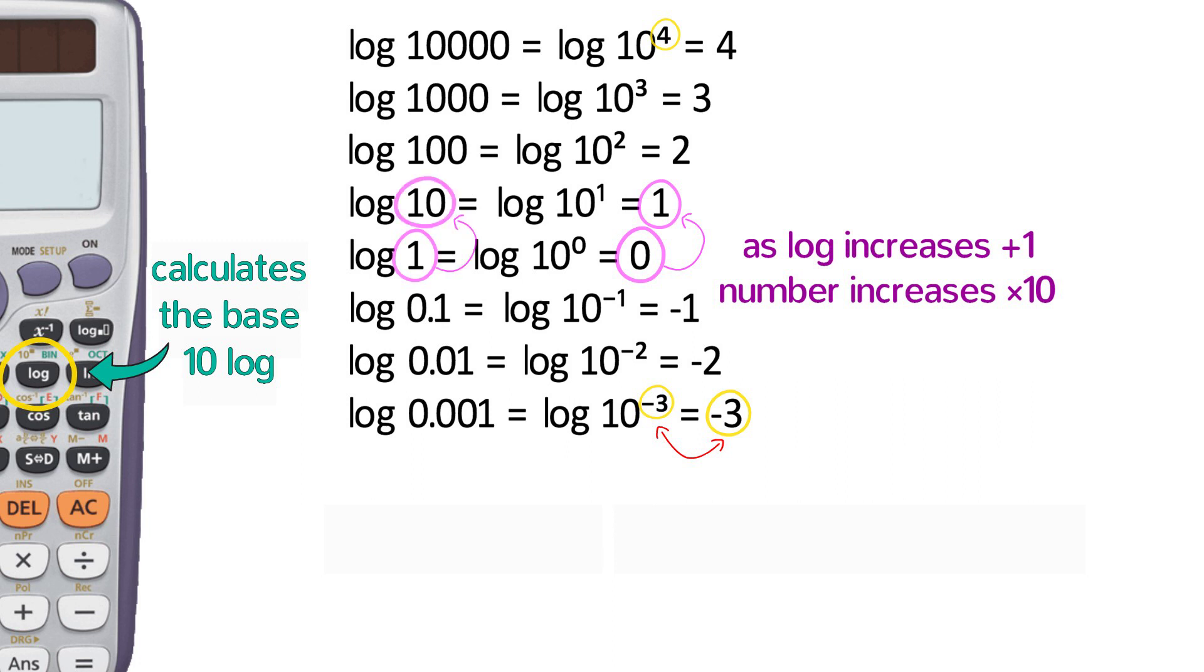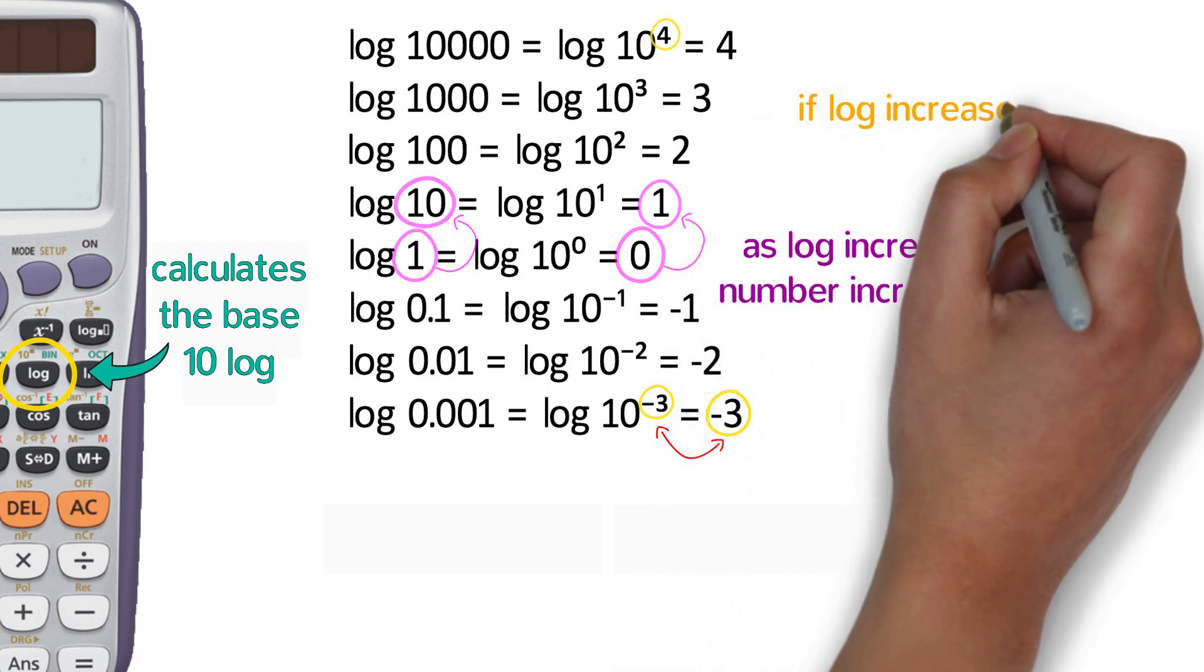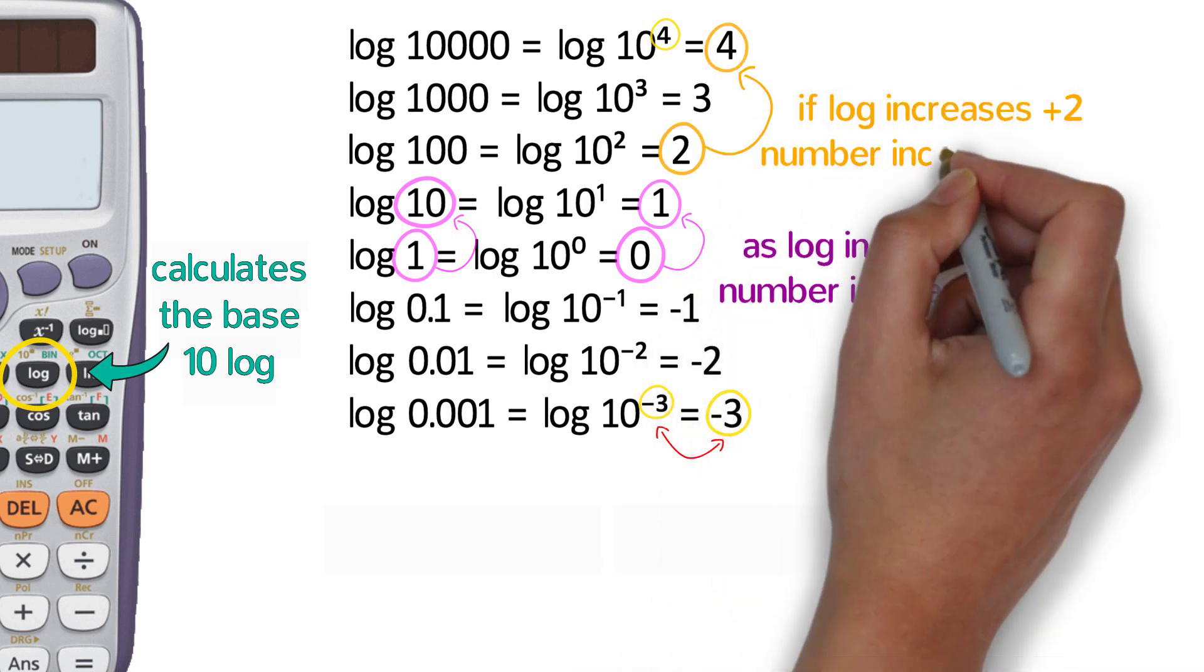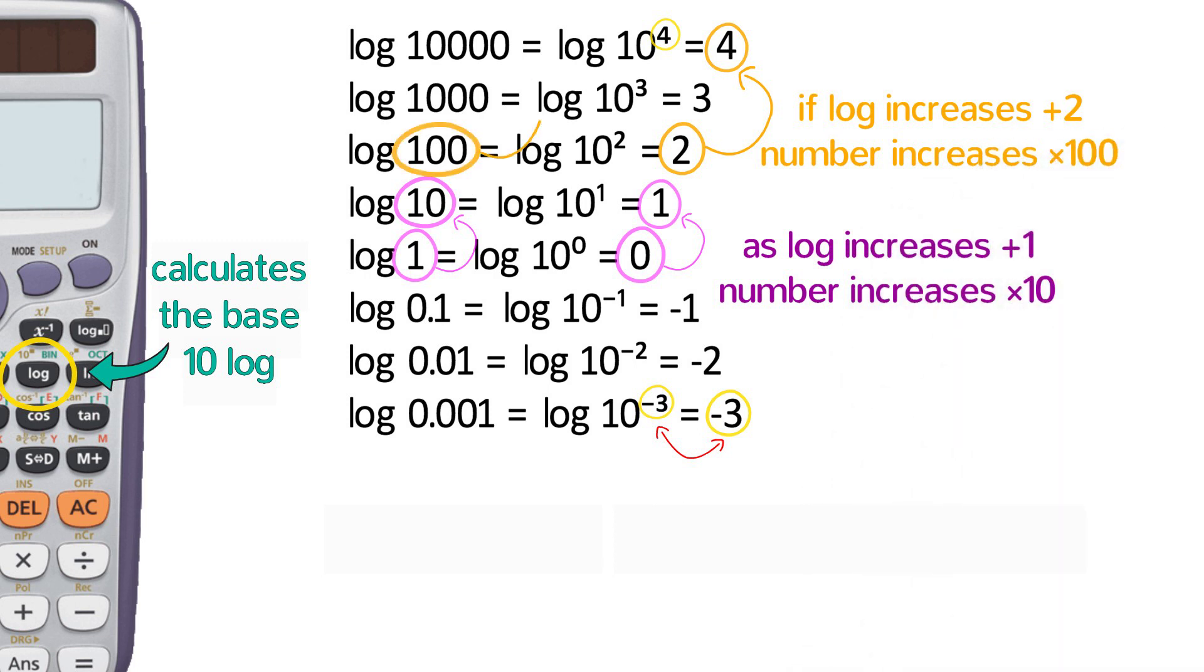This is true for any increase or decrease of the log by 1, that the number increases or decreases tenfold. And it is cumulative. For example, if the log increases by 2, the number is 10 to the second, or 100 times larger.